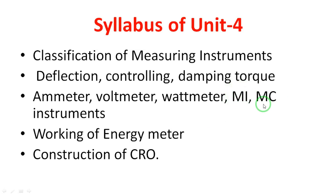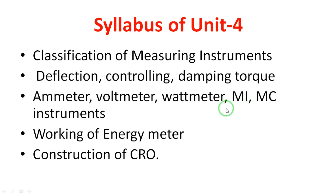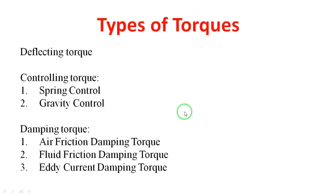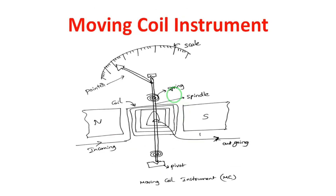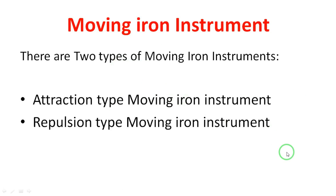Moving coil instruments are used for DC only, while moving iron instruments are used for both AC and DC. So moving iron instruments work with both AC and DC combinations. This is an important point. Now coming to the moving iron instrument — today we will discuss the moving iron instrument in detail.